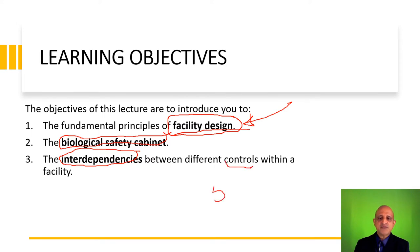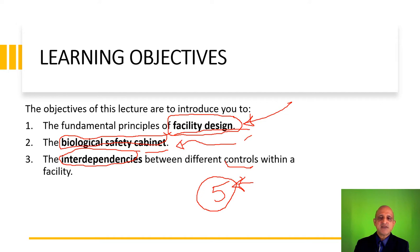Although we have five controls — which are elimination, substitution, engineering controls, administrative controls, and personal protective equipment — these controls are not used individually; rather they are used concurrently. For instance, if you need to use an engineering control such as a biological safety cabinet, you still have to refer to the standard operating procedure, which is an administrative control. This brings you into the area of interdependencies between different controls.